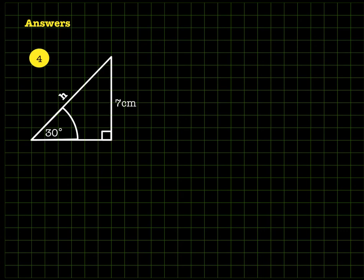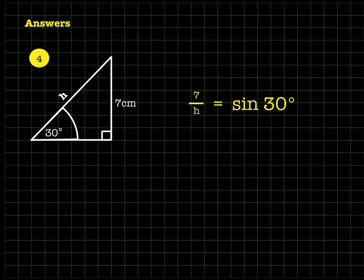Question four is a bit different because the missing value is the hypotenuse. We have a 30 degree right-angled triangle with 7 centimeters opposite the 30, and the missing hypotenuse is called h. So this time we write 7 divided by h equals sine 30. Sine 30 is exactly a half, so 7 divided by h is 0.5.